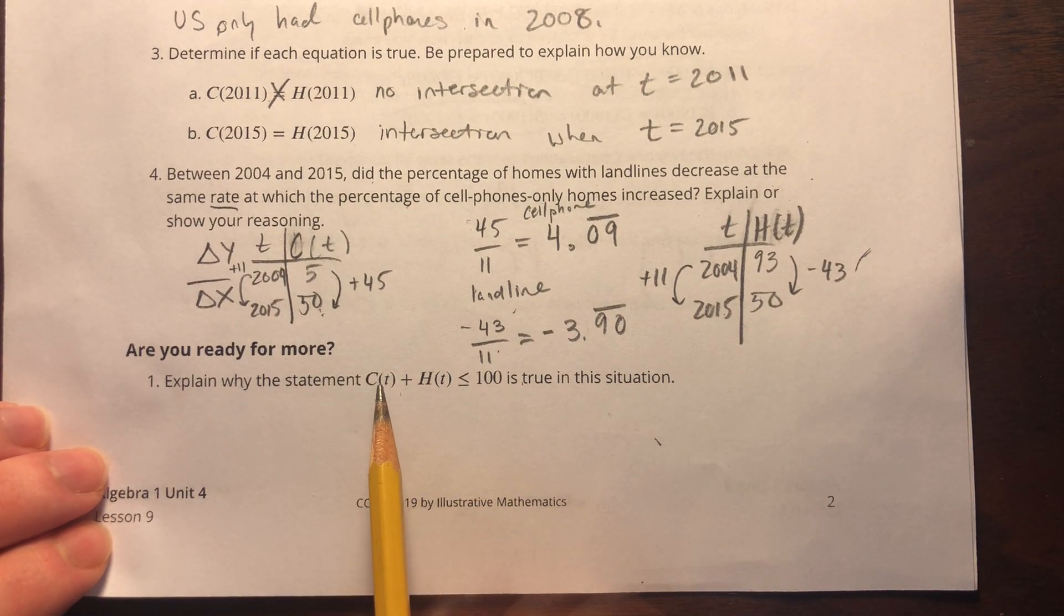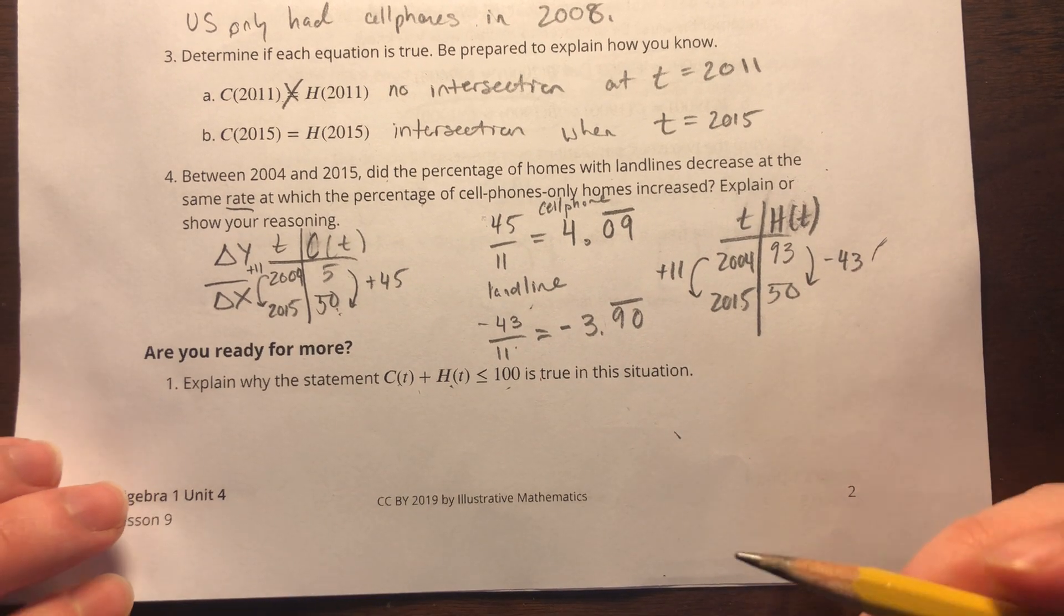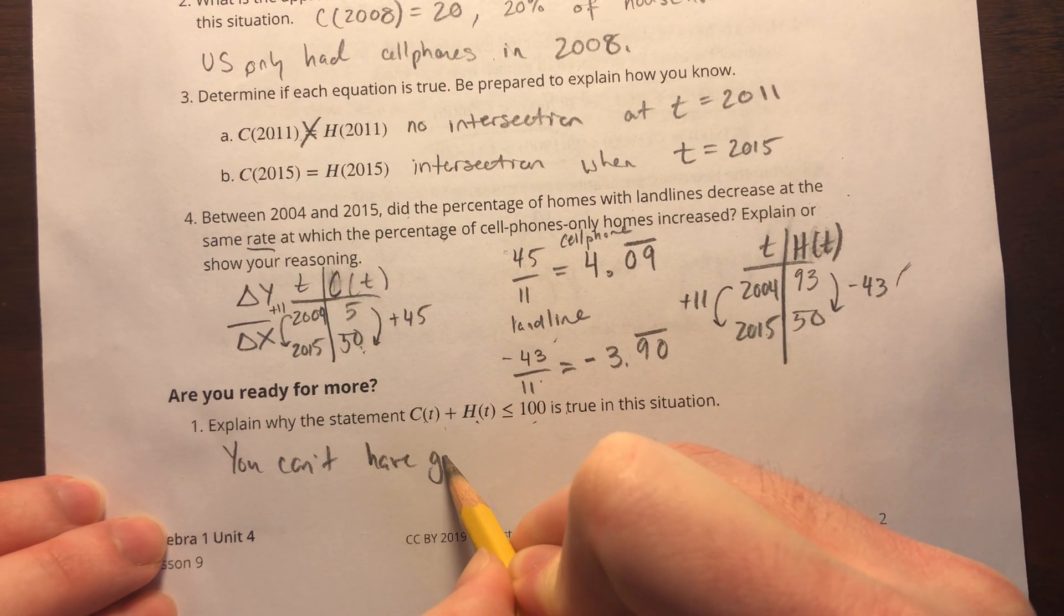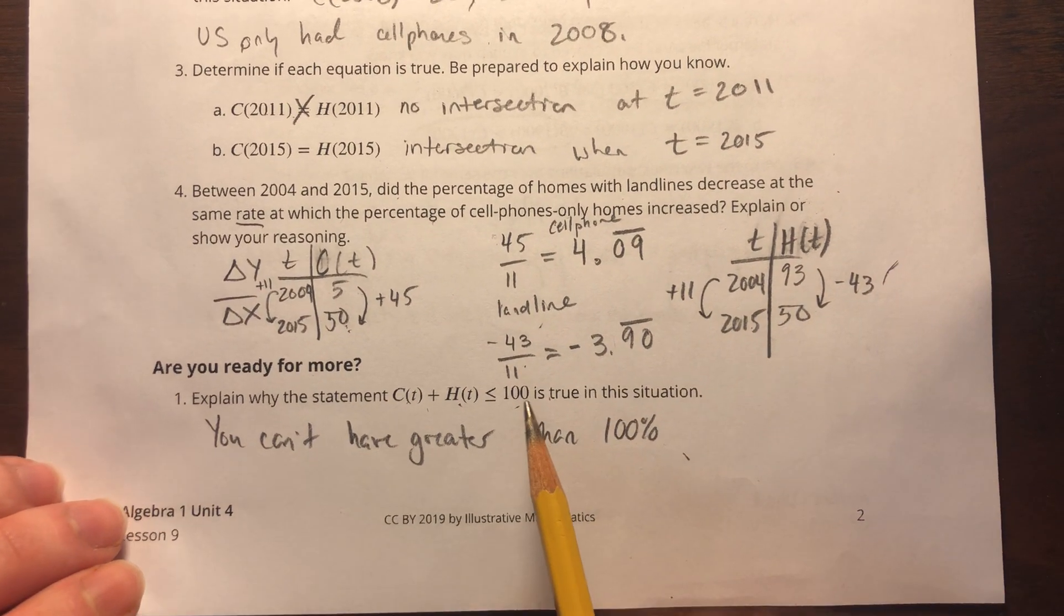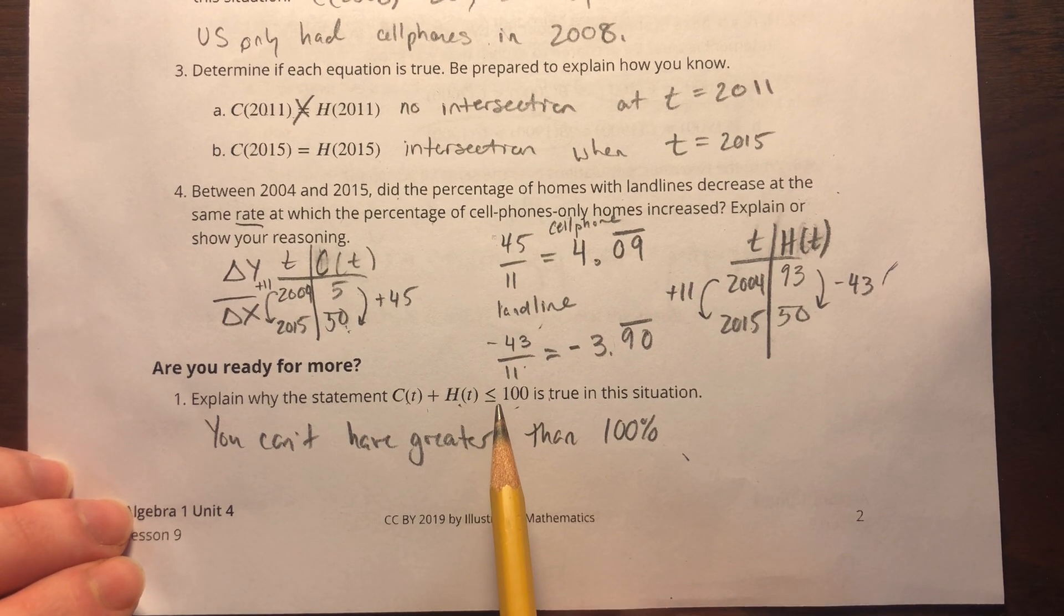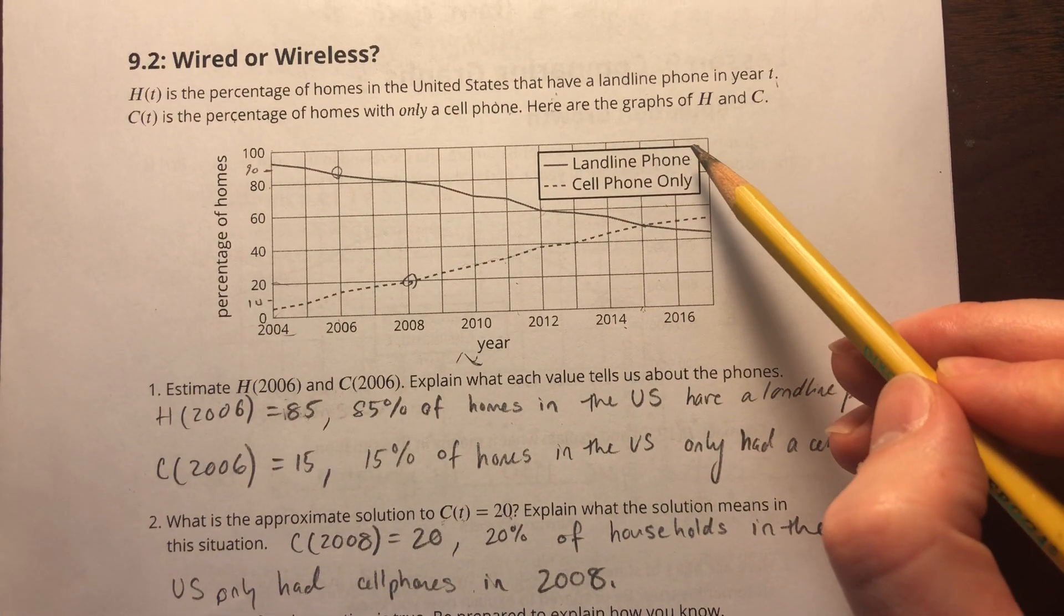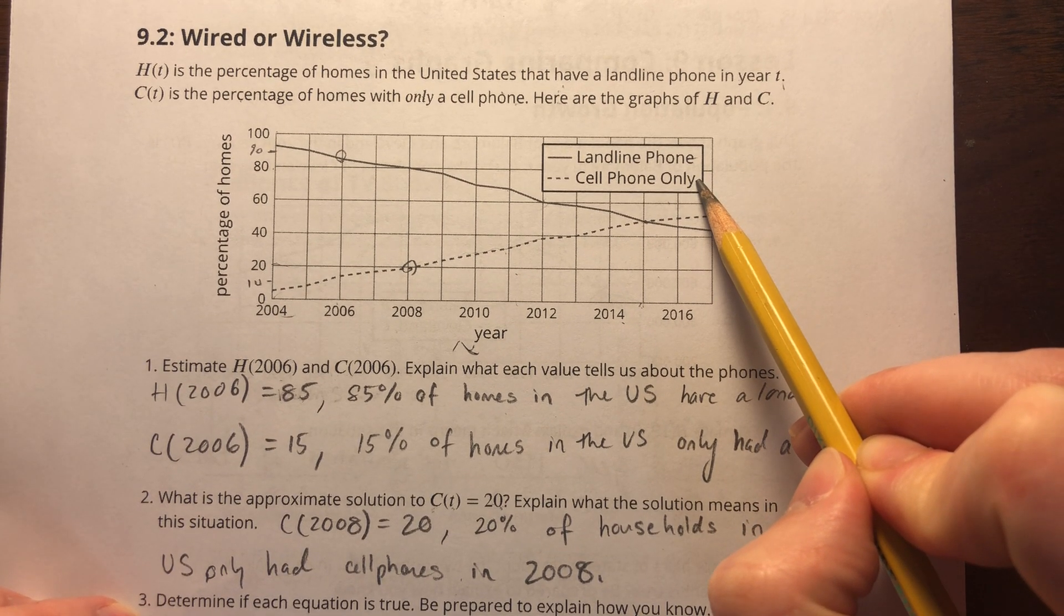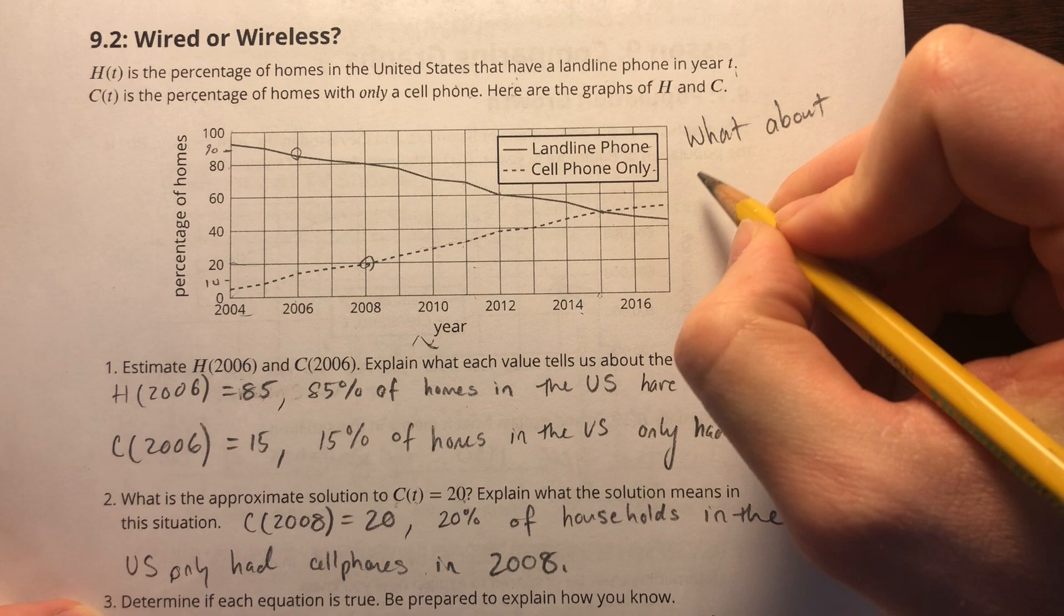Are you ready for more? Explain why the percentage of people with cell phones plus the percentage of people with just landlines is less than 100. Well, you can't have greater than 100%. I would even argue that you wouldn't even want to have the equals sign. Why am I saying that? If we're talking about people with only a landline or people with a cell phone only, we're leaving out a demographic. What about people with no phone?